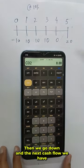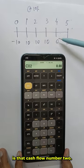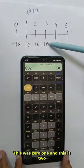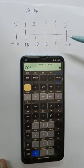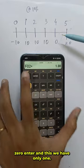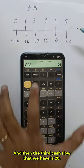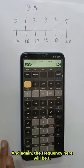Then we go down and the next cash flow we have is cash flow number 2. This was 0, 1 and this is 2. 0 enter and the frequency will be 1 and then the third cash flow that we have is 20. So enter and again the frequency here will be 1.